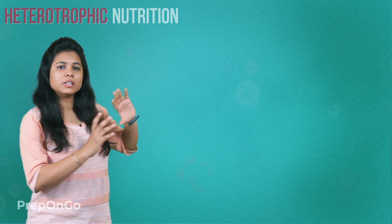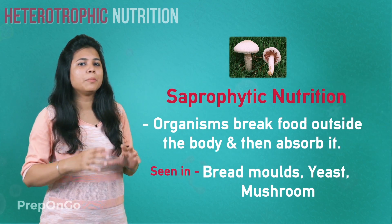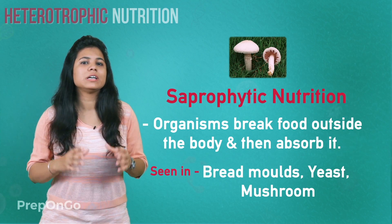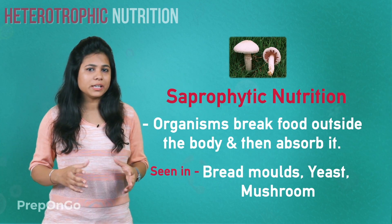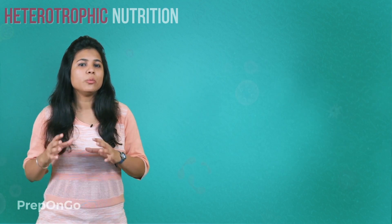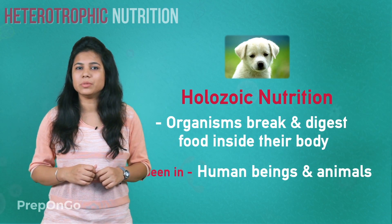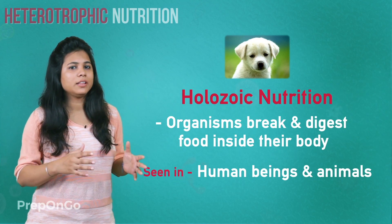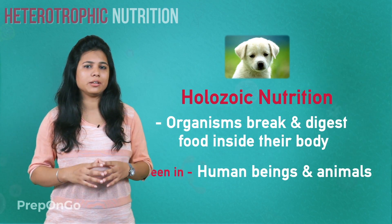The first are some organisms which take in the food by breaking it outside the body, like bread molds, yeast, and mushroom. They break their complex food particles outside the body and then absorb it. On the other hand, there are organisms like human beings and animals which take in the whole food into the body and then start the breaking of food. They are called holozoic animals.